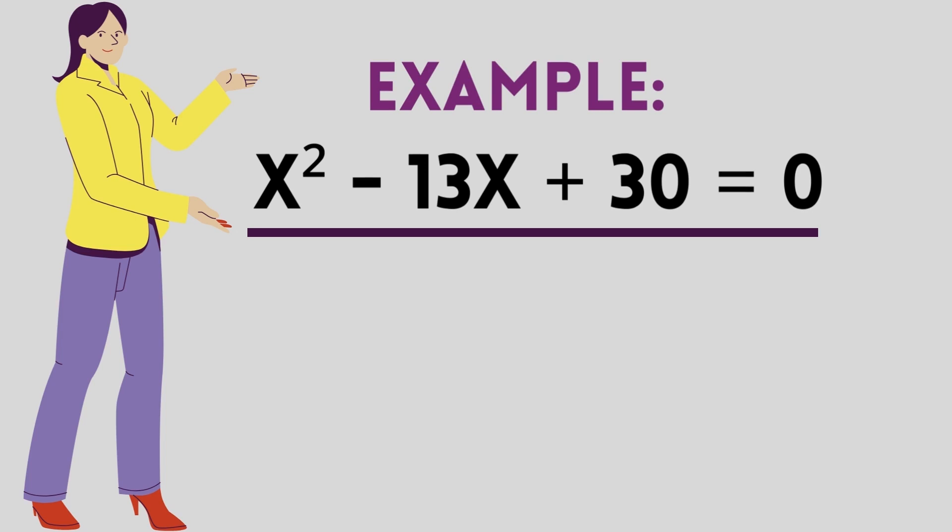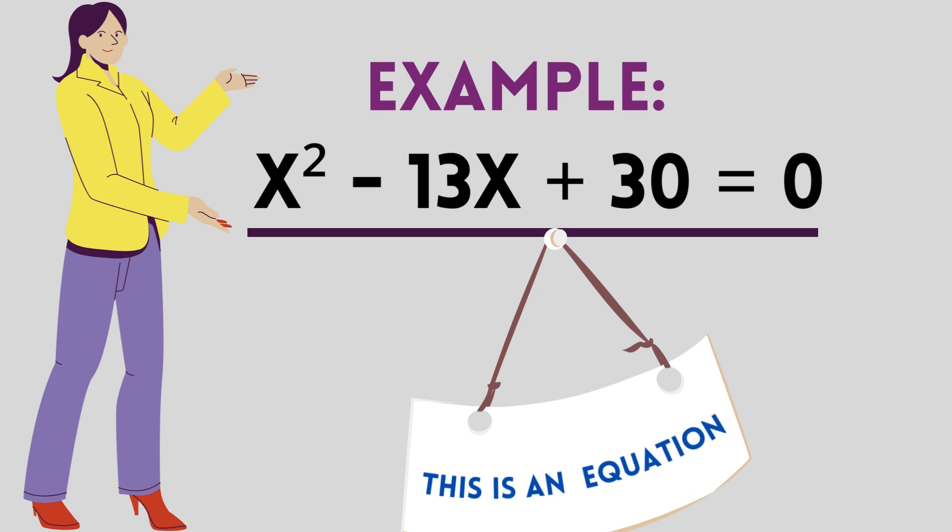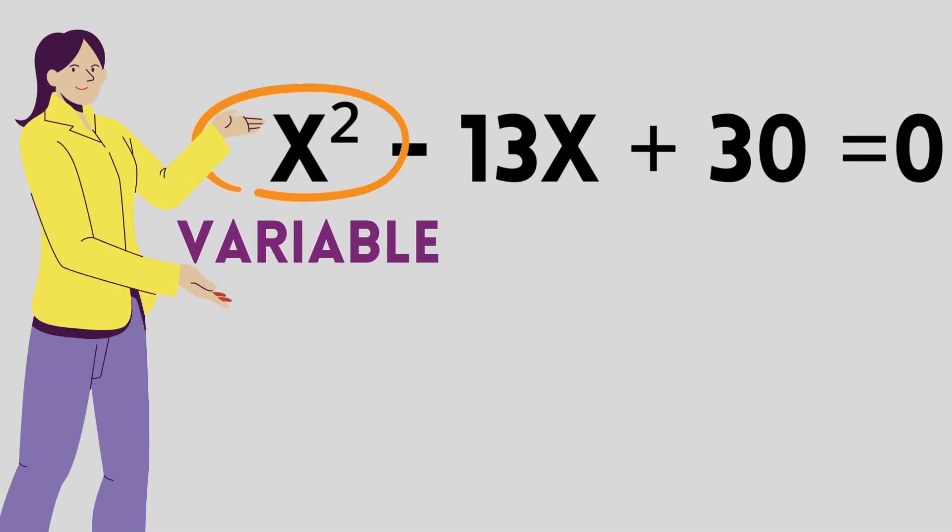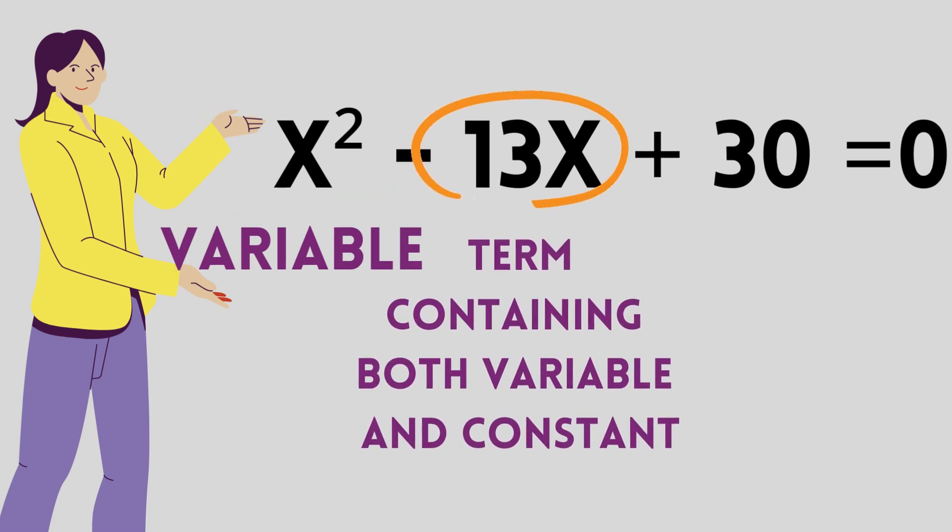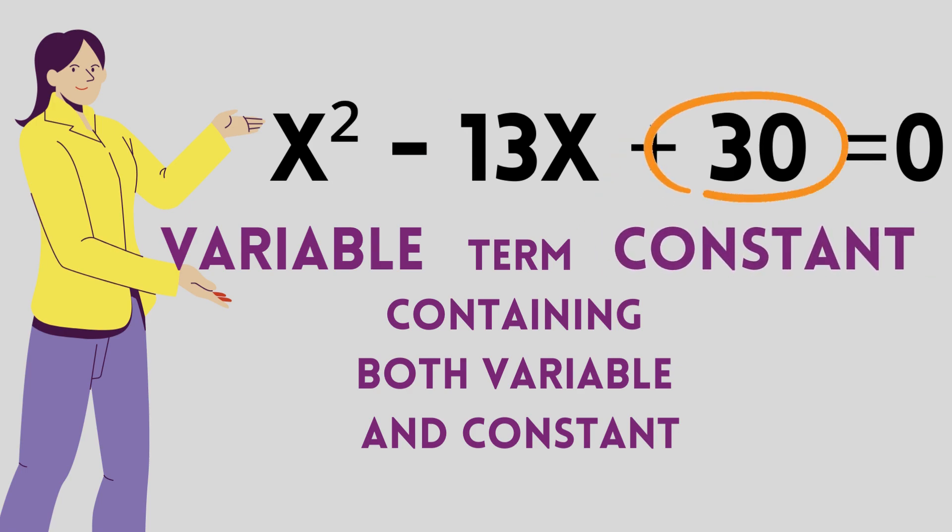Now let us take a look at an equation and identify the variable and the constant terms. Here, x is the variable and it has the power 2 which means x is multiplied twice, i.e. x × x. Next, we see the term minus 13x. This term contains both a variable and a constant. Minus 13 is a constant value while x is a variable. In the next term, we have 30 which obviously is a constant.